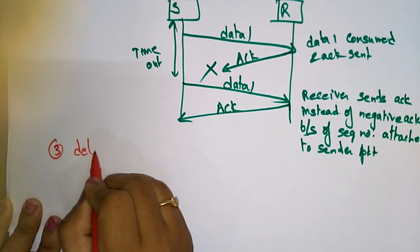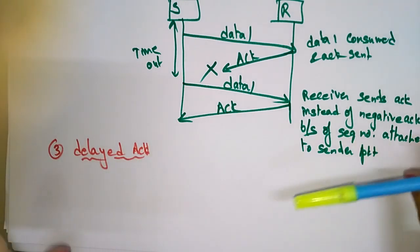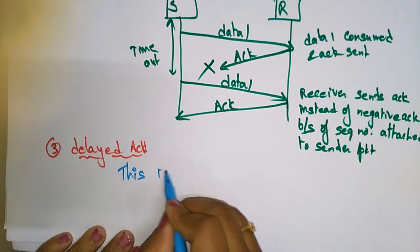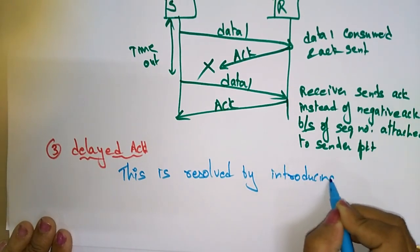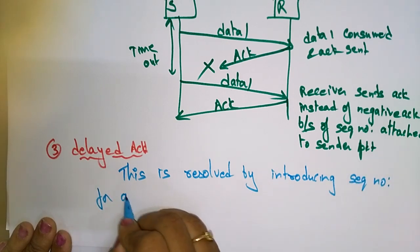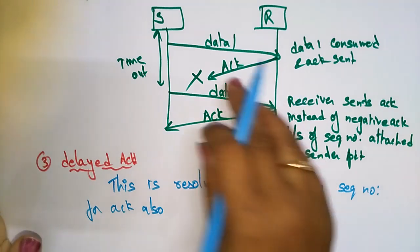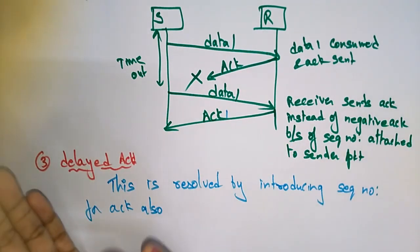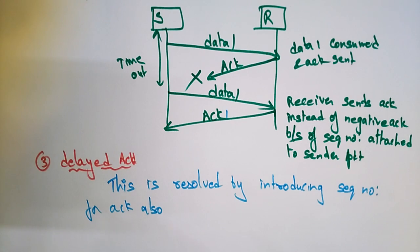The third concept is delayed acknowledgement. Delayed acknowledgement is resolved by introducing sequence numbers for acknowledgements as well. Whenever data 1 is sent, acknowledgement 1 must be sent; when data 2 is sent, acknowledgement 2 must be sent. This way there is no confusion for the sender or receiver about which data is received and which data is acknowledged.